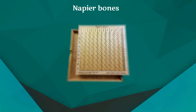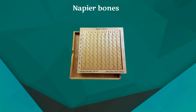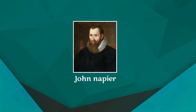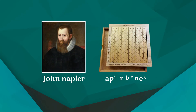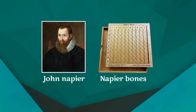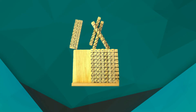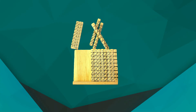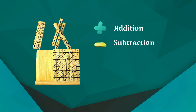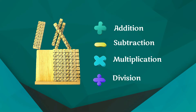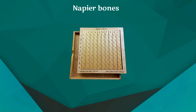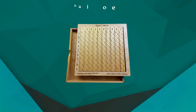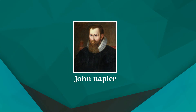As necessity demanded, scientists started inventing better calculating devices. John Napier of Scotland invented a calculating device in the year 1617 called the Napier's Bones. In this device, Napier used bone rods for counting, where some numbers were printed on these rods. These rods allowed one to do addition, subtraction, multiplication, and division easily. It is a manually operated calculating device for calculation of products and quotients of numbers.